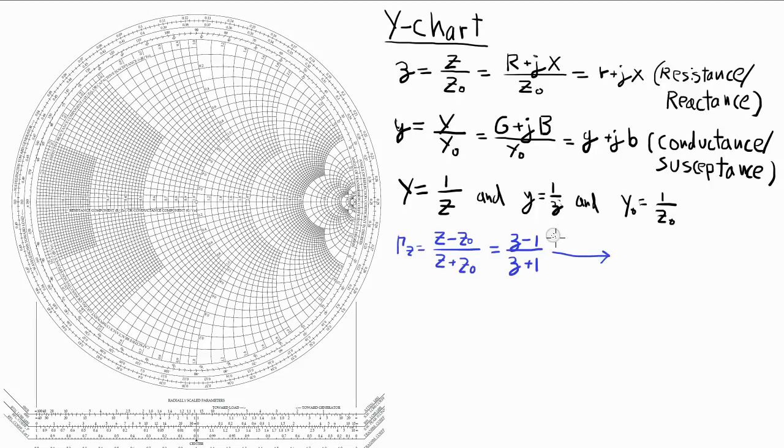Between gamma z and gamma y, and we're going to define gamma y as y minus y0 divided by y plus y0, which can be normalized to little y minus 1 over little y plus 1.